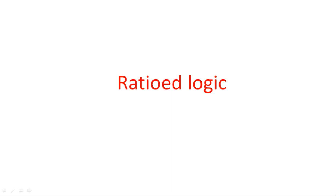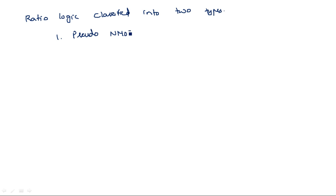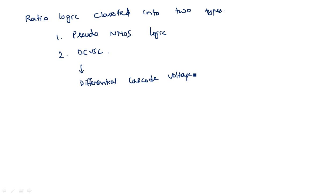In this video we are going to learn about ratioed logic. Ratioed logic is classified into two types: the first one is pseudo NMOS logic, and the second one is DCVSL — differential cascode voltage swing logic.